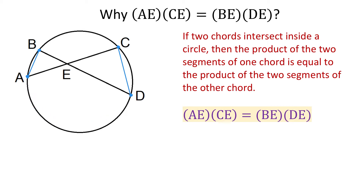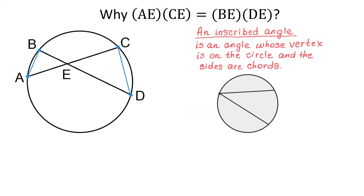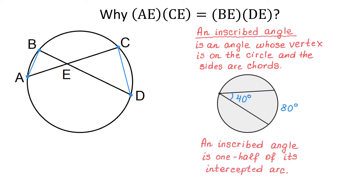An inscribed angle is an angle whose vertex is on the circle and the two sides are chords. Also, an inscribed angle is one half of its intercepted arc. So this is the intercepted arc for this angle, and if the measure is 80 degrees, then the inscribed angle will be half of 80, which is 40 degrees.